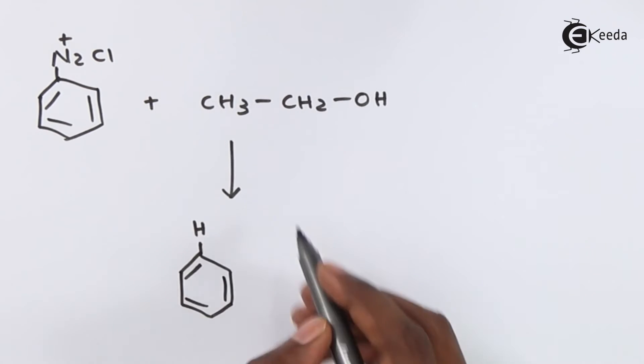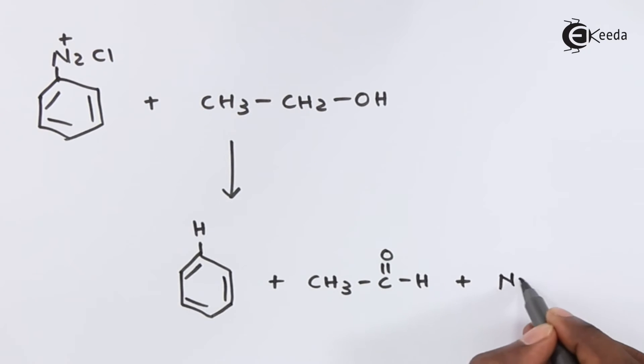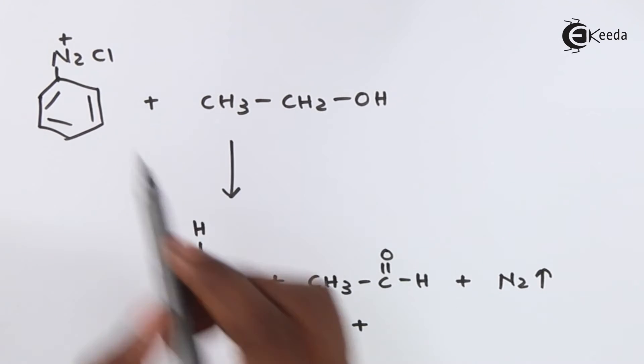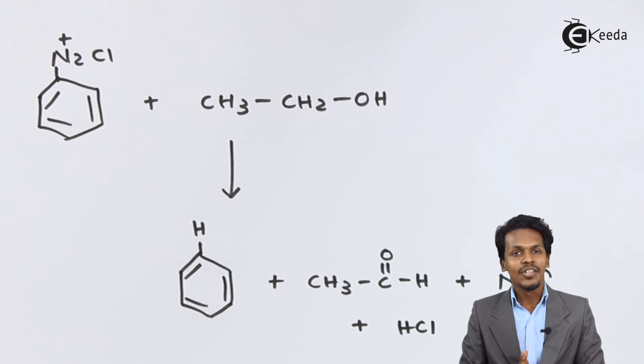The rest of the reagent turns into CH3-CHO along with N2 which evaporates, and HCl as a byproduct. Here we have converted benzene diazonium chloride to benzene. This was the reaction.